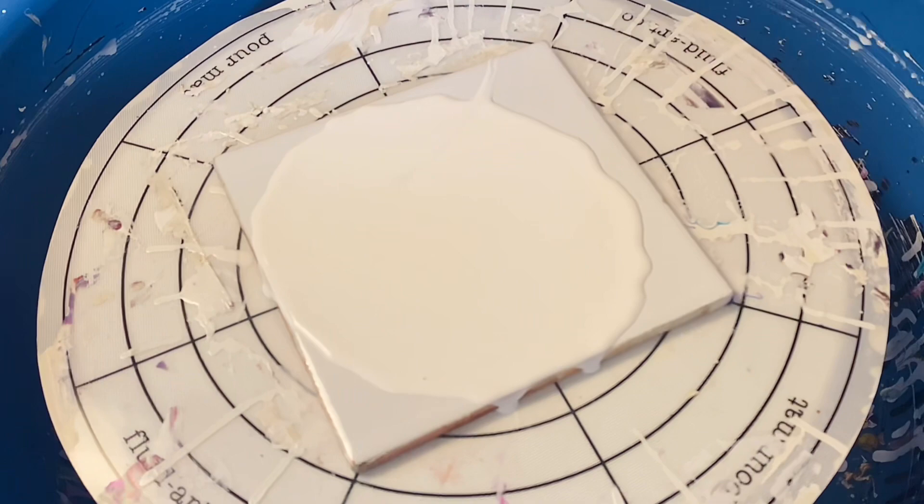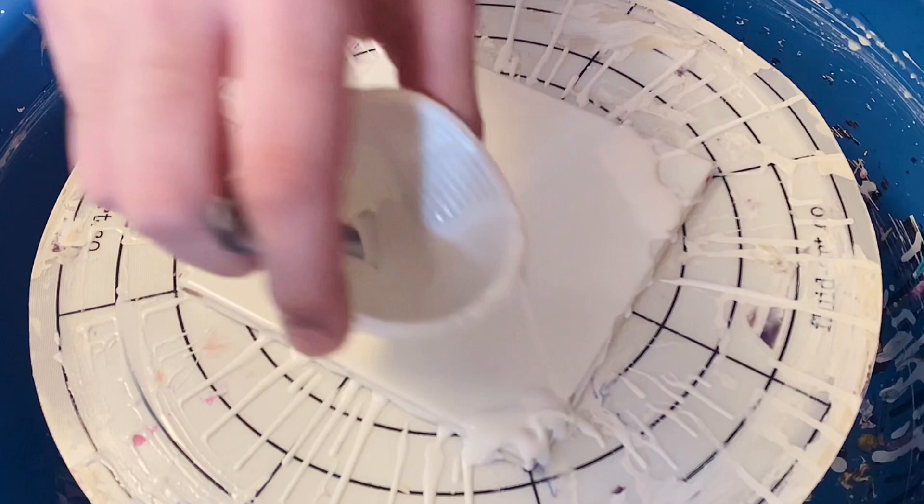So what I'm putting down first is interior house paint. This is titanium white, it's latex-based, and I thin it with just a little bit of water because in Egypt pillow paint is very thick, like paste-like, it's not even fluid.